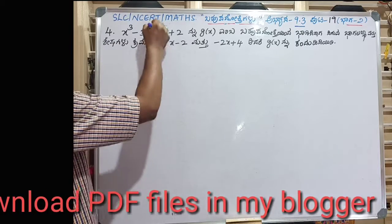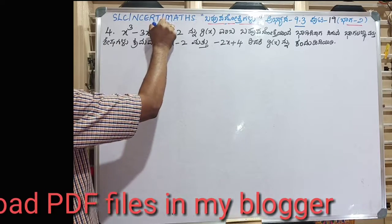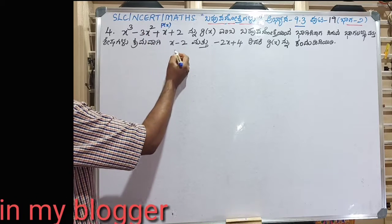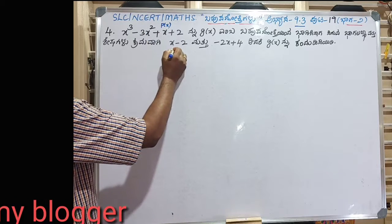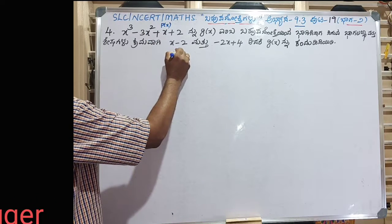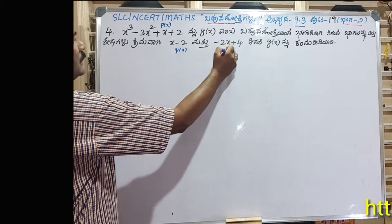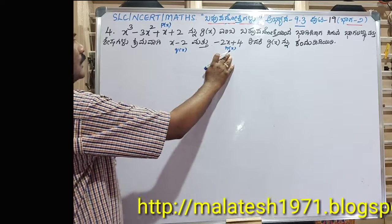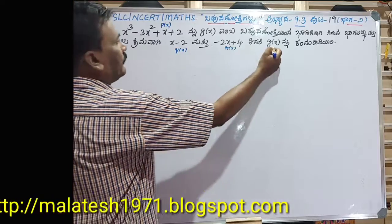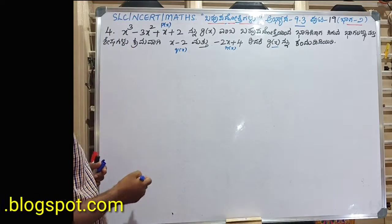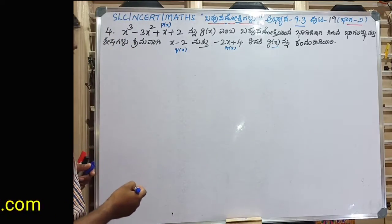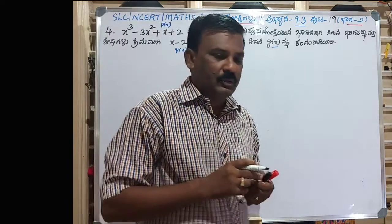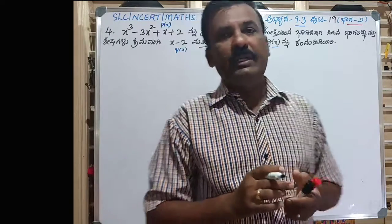So, this is P of X. It is Q of X. This is R of X. So, this is G of X. So, this is how we start. This is Euclidean's function.